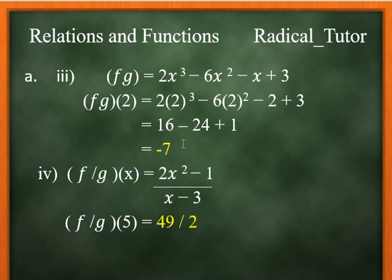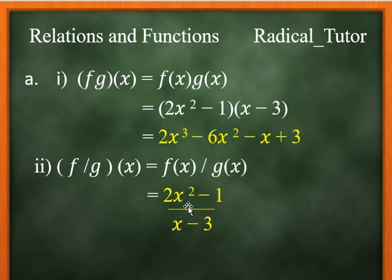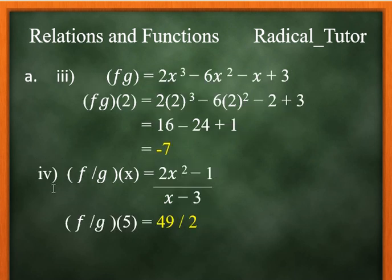For f over g at 5, we use f over g which is 2x squared minus 1 over x minus 3. Substitute x equals 5: that's 2 times 25 minus 1 over 5 minus 3, which equals 49 over 2.